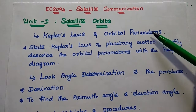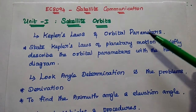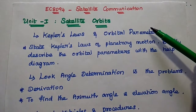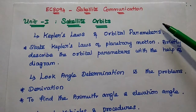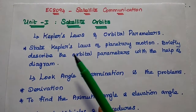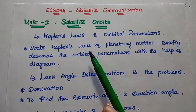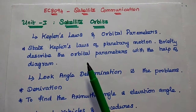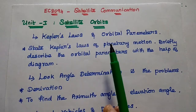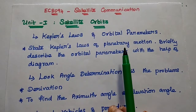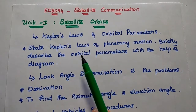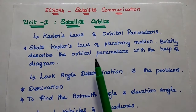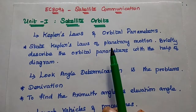Now we are going to discuss the important and expected questions in satellite communication. The first unit is all about satellite orbits. Kepler's laws and orbital parameters — these two topics are very important. We can expect questions from these.